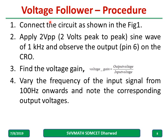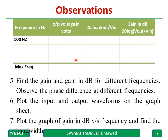The procedure is very simple: connect the circuit diagram, apply a 2 Vpp peak-to-peak sine wave at 1 kHz, and observe the output at pin number 6 on the CRO. Find the voltage gain — voltage gain is given by output voltage divided by input voltage. Vary the frequency from 100 Hz towards the maximum available and observe the output voltage. Note the results in the tabular column: frequency, output voltage, gain, and gain in dB.